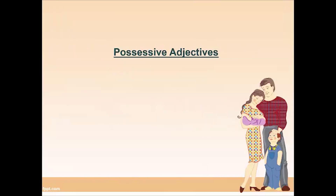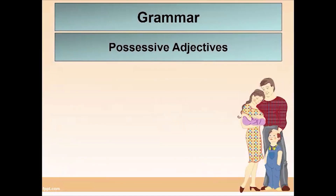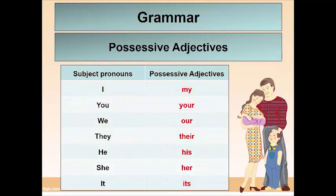Here we have the grammar part. Today's grammar is about possessive adjectives. Here we have a table of subject pronouns and possessive adjectives. Subject pronouns: I, you, we, they, he, she, it. Each subject pronoun has its own possessive adjective: I → my, you → your, we → our, they → their, he → his, she → her, it → its.